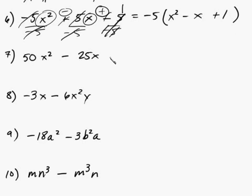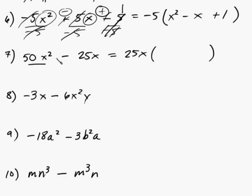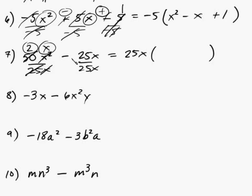For this one, we have x squared and x — lower degree is x. And 50 and 25 — 25 works as a common factor. So let's factor out 25x. Set up the parentheses and divide by 25x. Twenty-five goes into 50 two times, giving 2x. Keep the minus sign. Twenty-five goes into 25 once, giving 1. So you get 2x minus 1, meaning 25x times (2x minus 1).